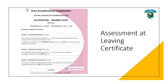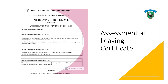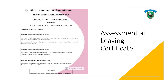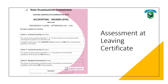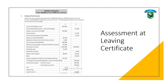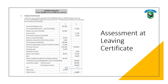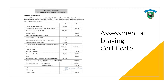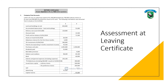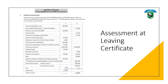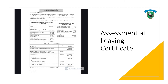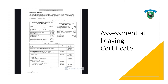The Leaving Cert accounting exam makes up 100% of your grade. The paper is divided into three sections, and in each section there are specific guaranteed questions that come up every single year. In section one, you answer one question; in section two, two questions; and in section three, one question. Question one appears every single year, is worth 120 marks — the most marks on the whole paper — and varies between three different key topics with essentially the same question format and slightly different figures.